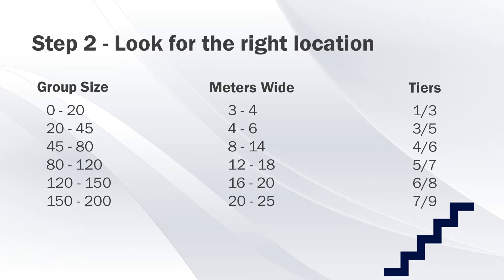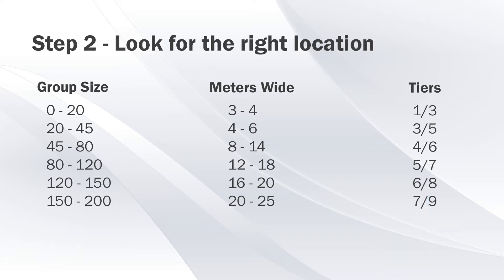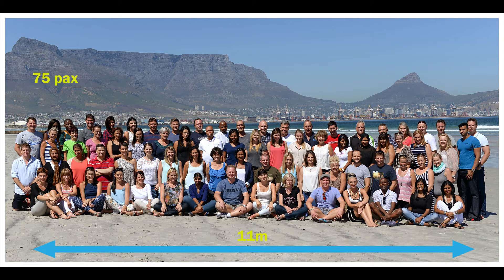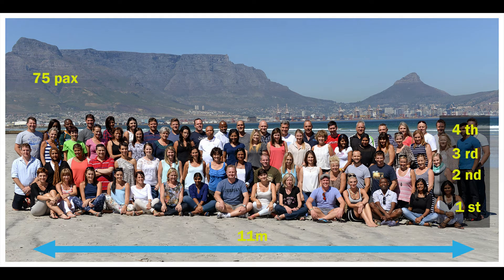Tiers could be stairs, chairs, people standing, etc. For example, if your group photo is 60 people, you will need between 8 and 14 meters wide and 4 to 6 tiers. In this image, there are 75 people who have used approximately 11 meters wide and 4 tiers: sitting, kneeling, shorter standing, and taller standing.